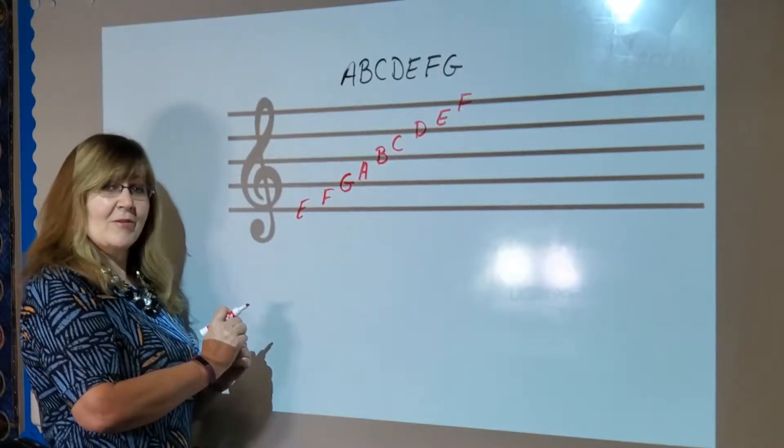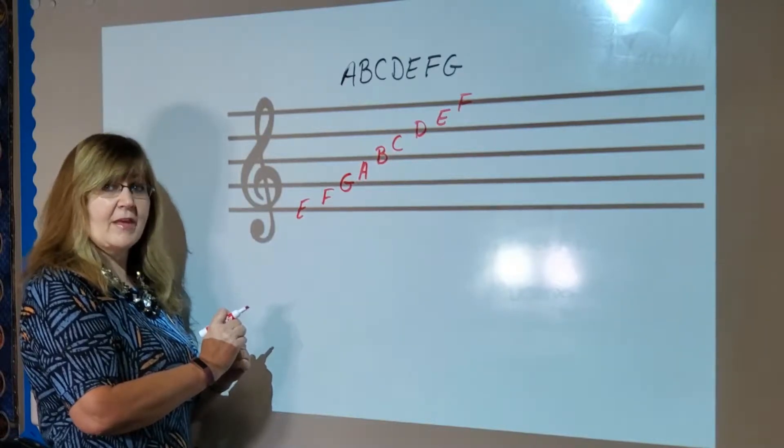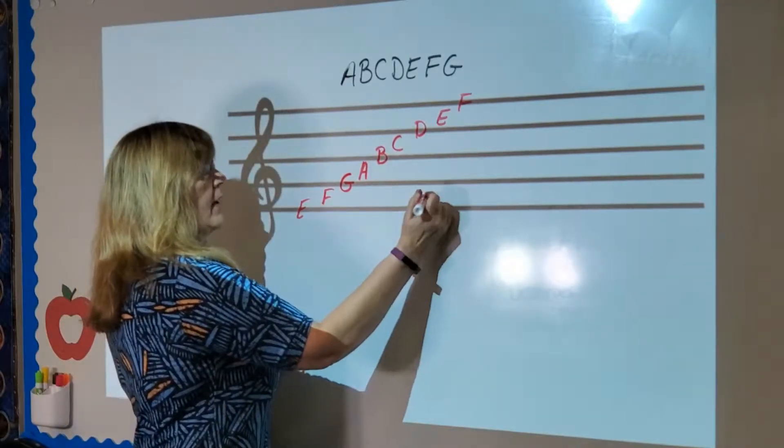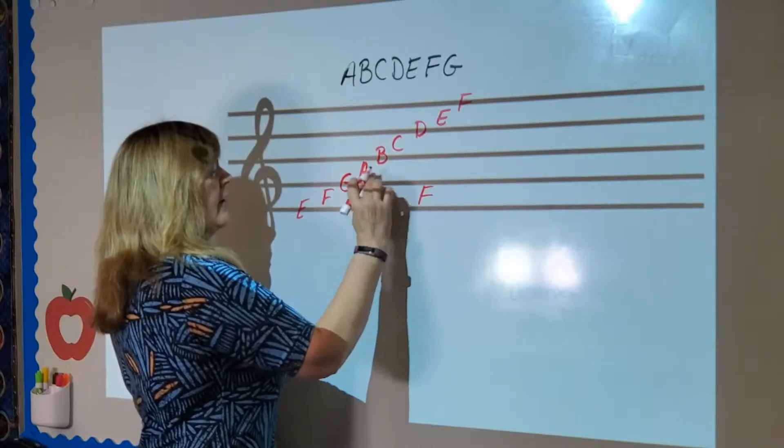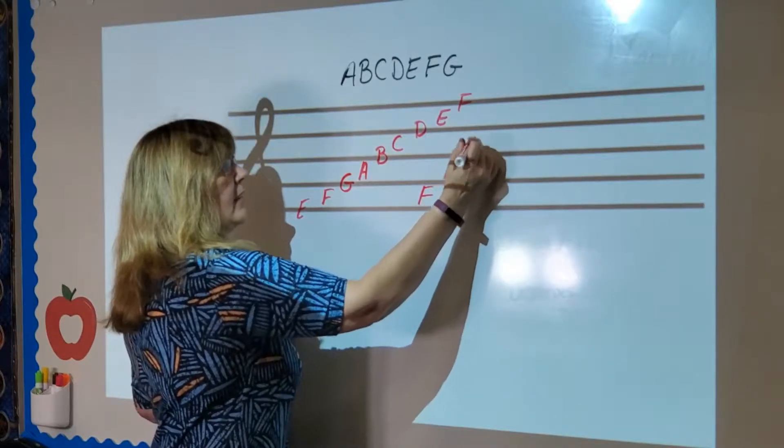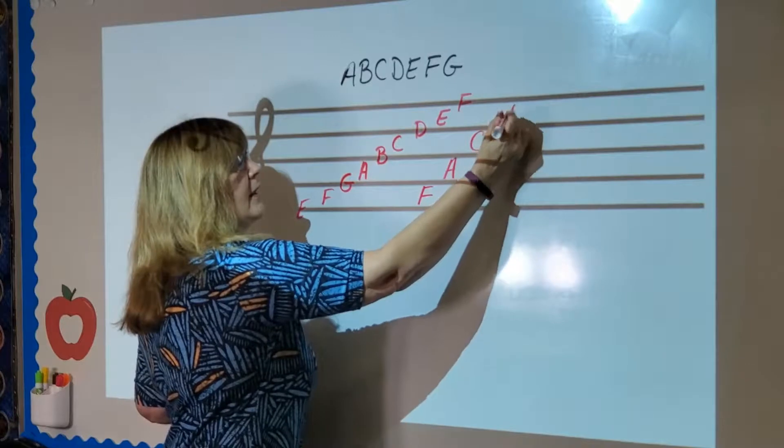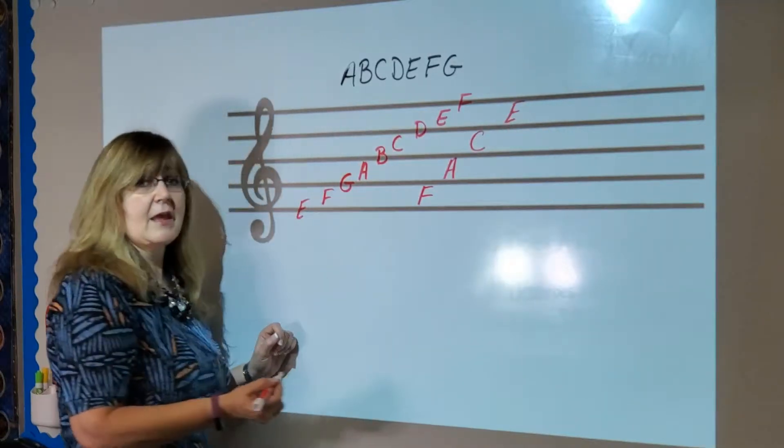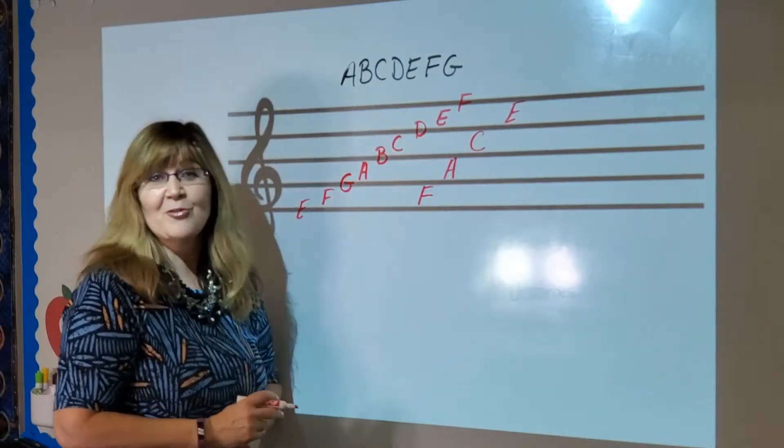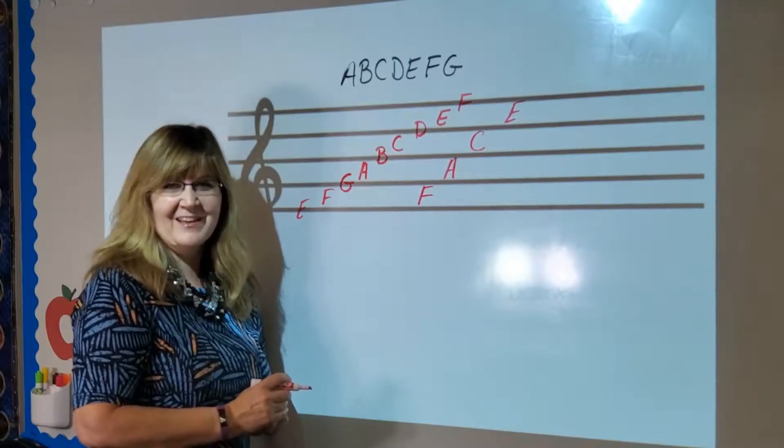So what we do is we split it up between space notes and line notes. Well the space notes we know the bottom note is F and then the second space is A, third space is C, and the fourth space is E and look at that it spells the word face. That's kind of convenient and easy to remember.